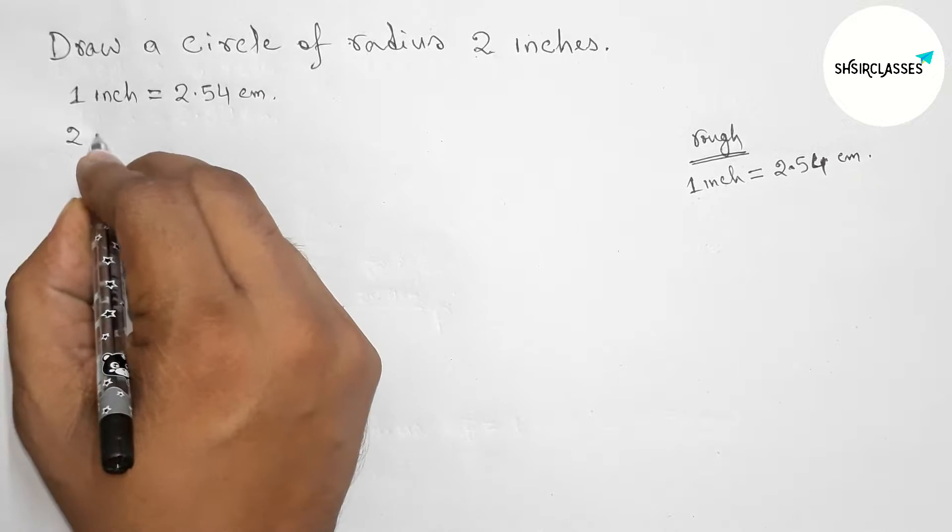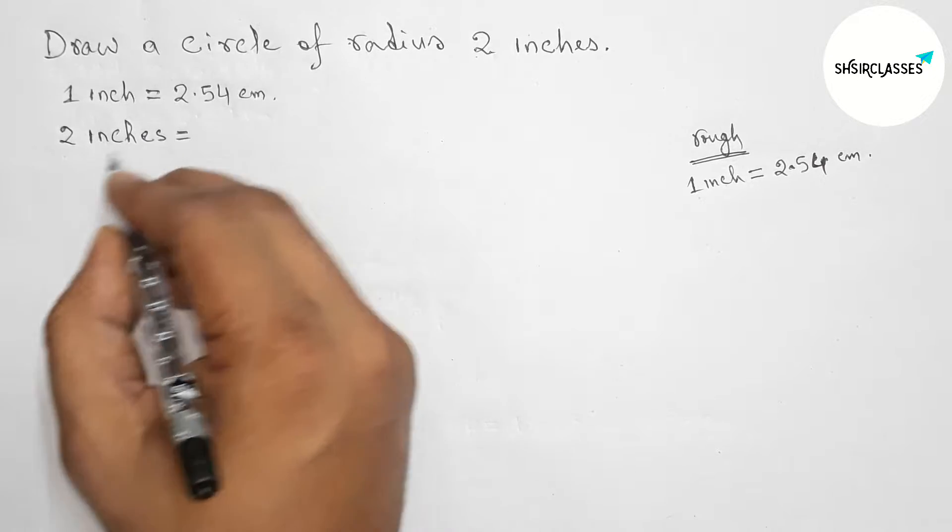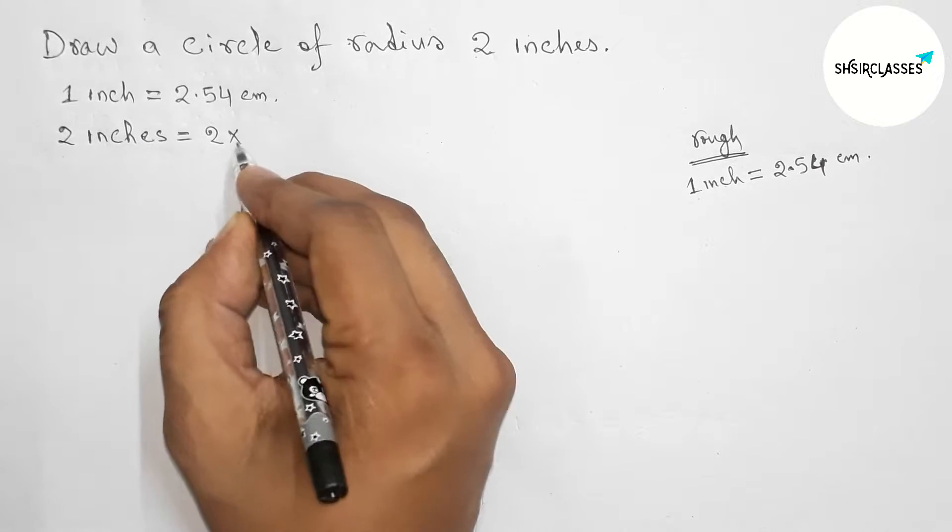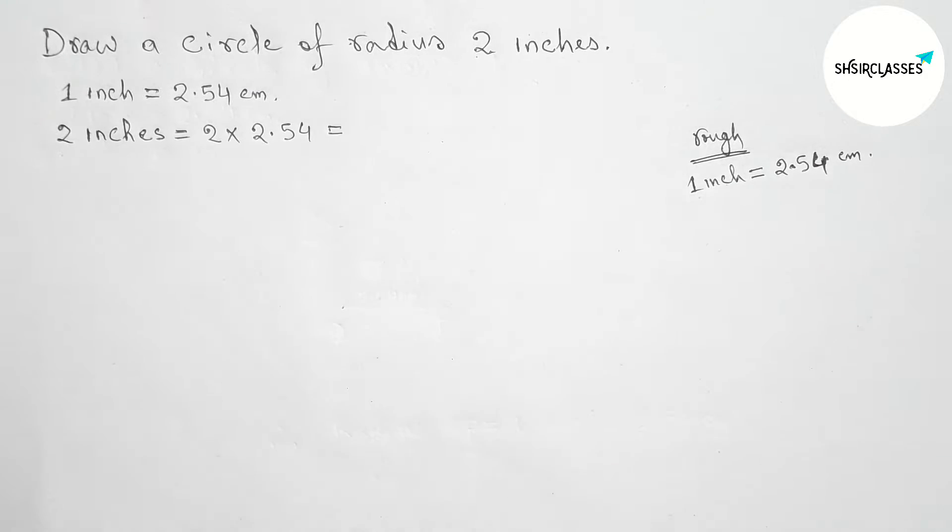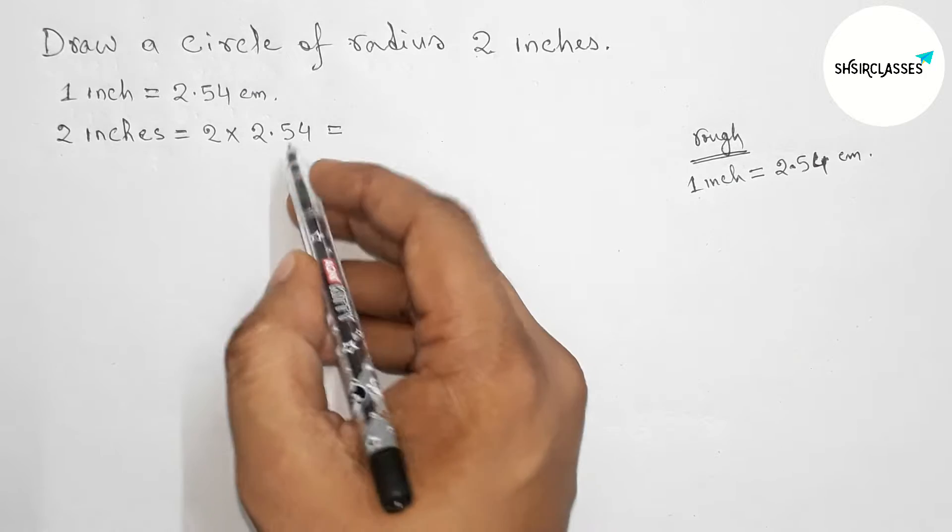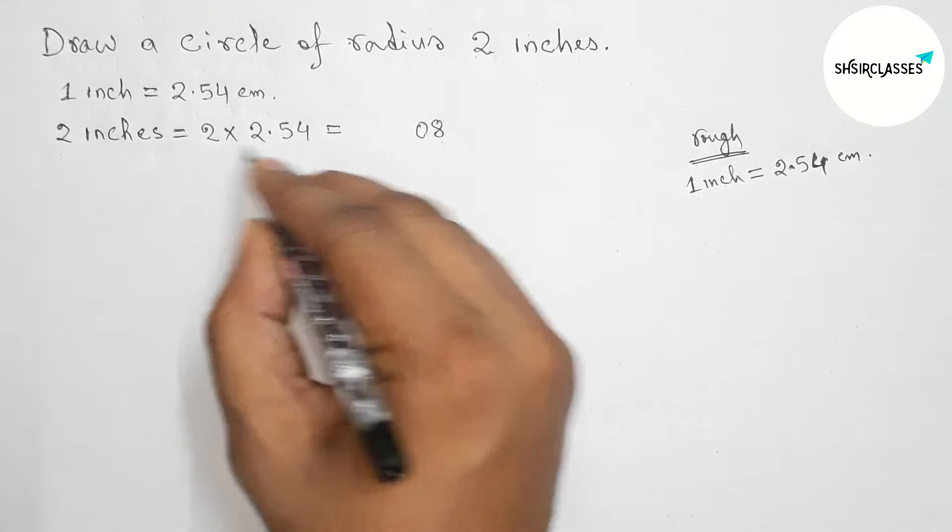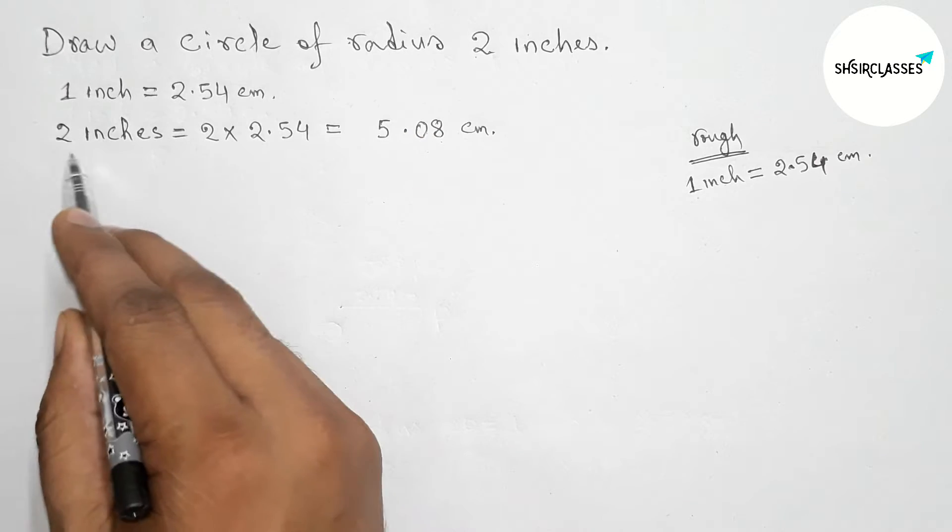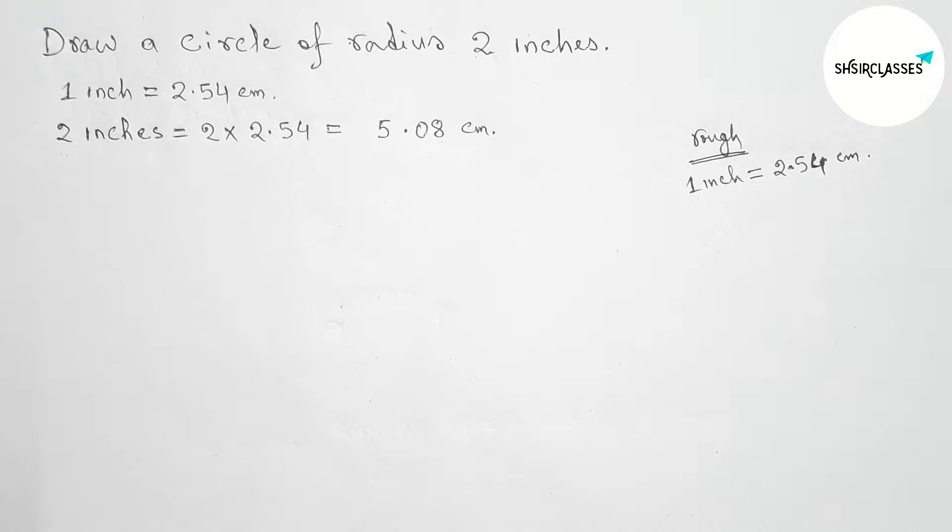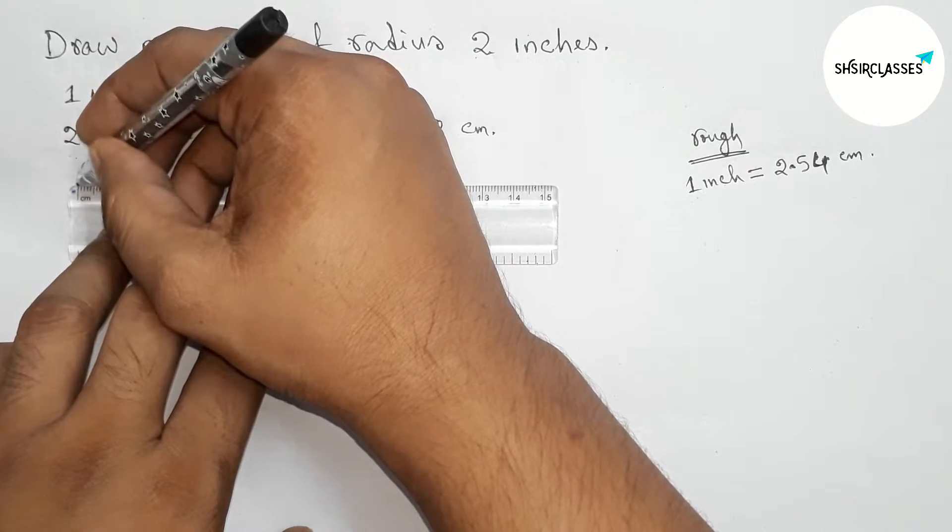Now 2 inches equals 2 times 2.54 centimeters. Multiplying 2 into 2.54, this is 8 and 5, so 5.08 centimeters. Therefore, 2 inches equals 5.08 centimeters.